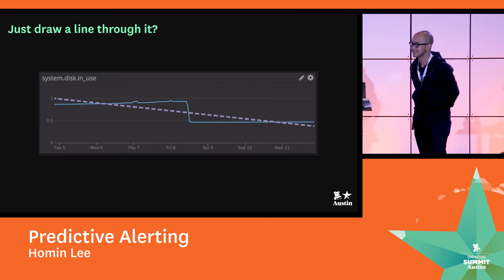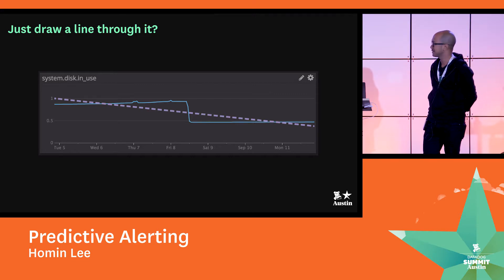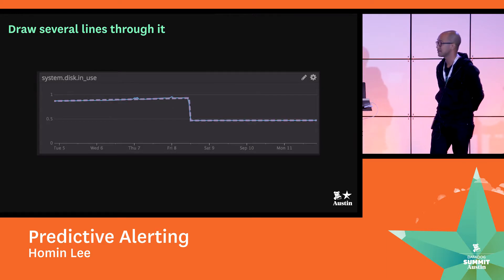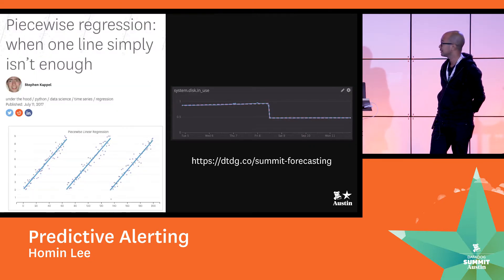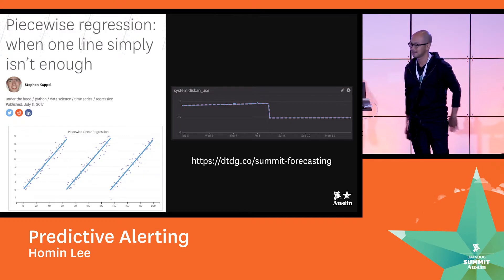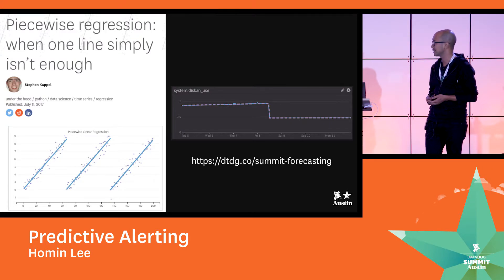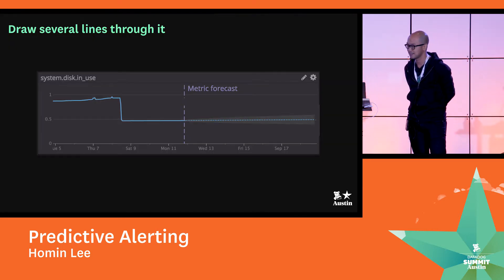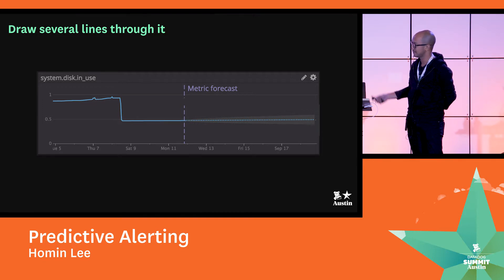Or is it? Disk metrics often look like a sawtooth because you did clear those logs or delete those files. If you draw a simple line, you're going to extend it downward and it'll say you're actually running to zero. So what we actually want to do is draw several lines through the metric and just take the last one and extend that. Luckily we have an excellent algorithm for doing just that — you can read a blog post about it by Stephen Koppel, which has interactive graphics you can play with. Using our piecewise linear regression algorithm, you can draw the line you want, extend it, and get the forecast you want.